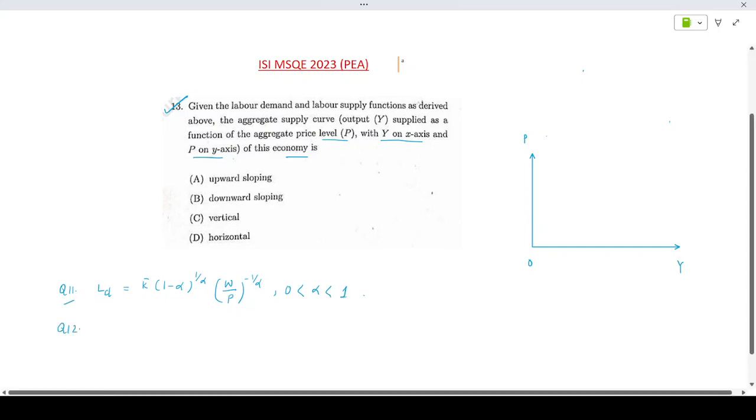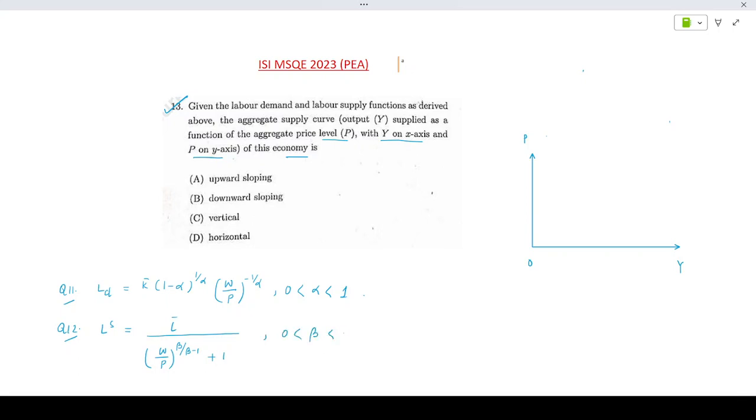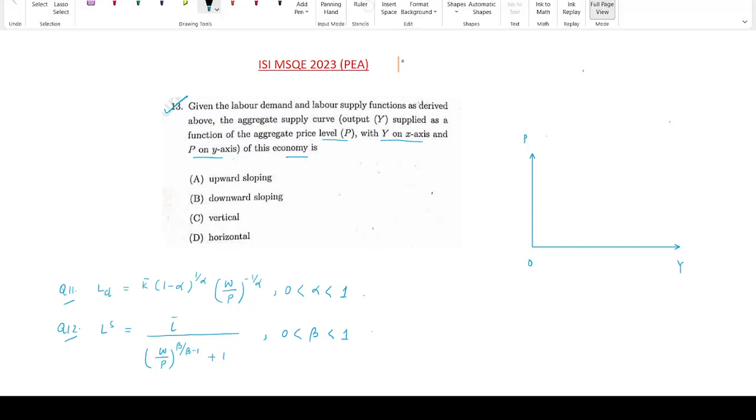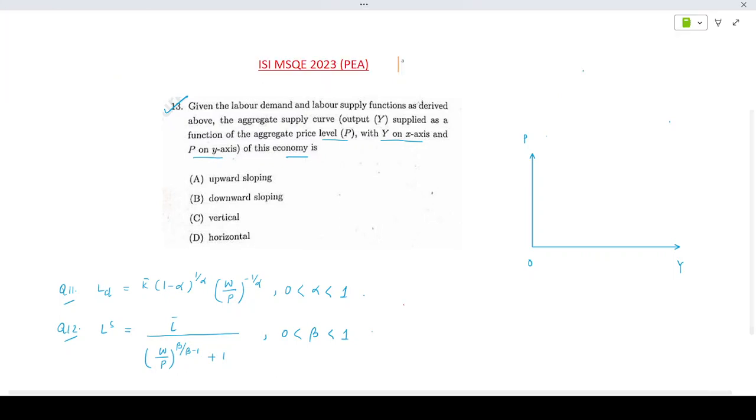From question 12, we have obtained the labor supply curve as l bar divided by [(w/p)^(beta/(beta-1)) + 1], where beta lies between 0 and 1. For detailed derivation of these two, you can refer to the videos for these questions.